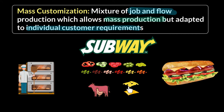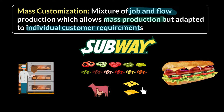Flow production at the start reduces your costs, and giving customers the option to customize at the point of sale increases your sales. That is mass customization — a mixture of job and flow production which allows mass production but adapted to individual customer requirements as well.